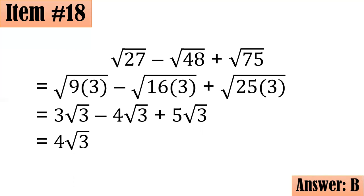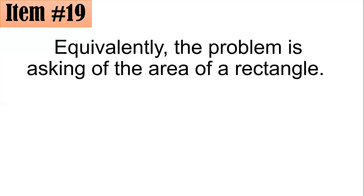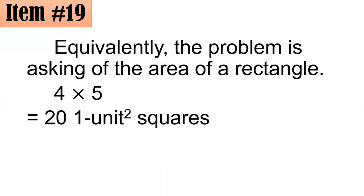19. How many 1 unit square squares can be cut from a 4 by 5 rectangle? Is it 9, 18, 20, or 25? This is pretty straightforward. Equivalently, the problem is asking of the area of the rectangle. Because area, it's actually asking you of the number of square units. So, we have 4 times 5. That gives you 20, 1 unit squared squares. Letter C.